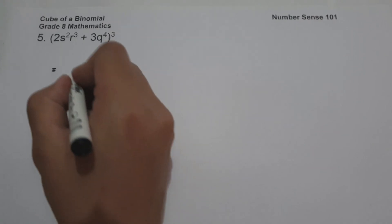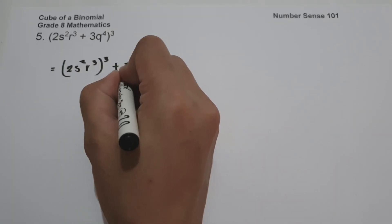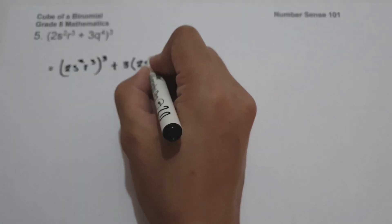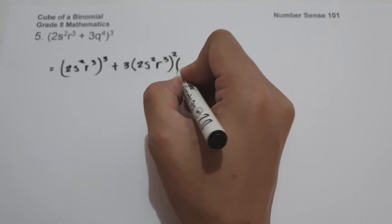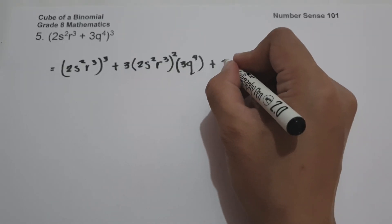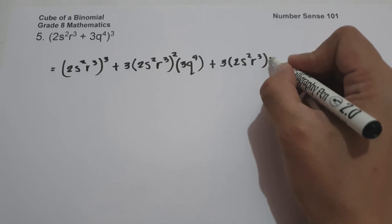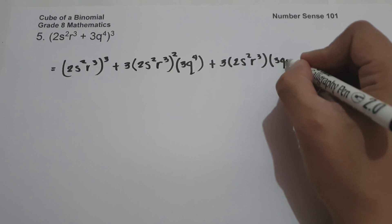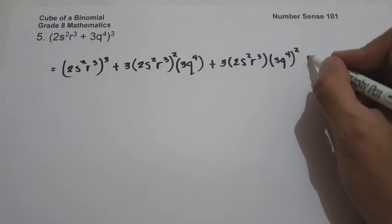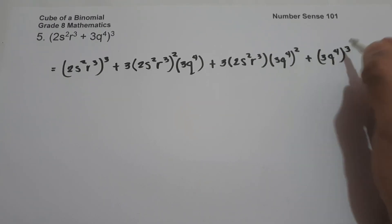Example 5: we have the cube of (2x²r³ + 3q⁴). To simplify, the cube of the first term is (2x²r³) raised to 3, plus 3 — a constant — times the square of the first term (2x²r³) raised to 2, multiplied by the second term (3q⁴). The third term is 3 times the first term 2x²r³ times the square of the second term (3q⁴) squared. The last term is (3q⁴) raised to 3.